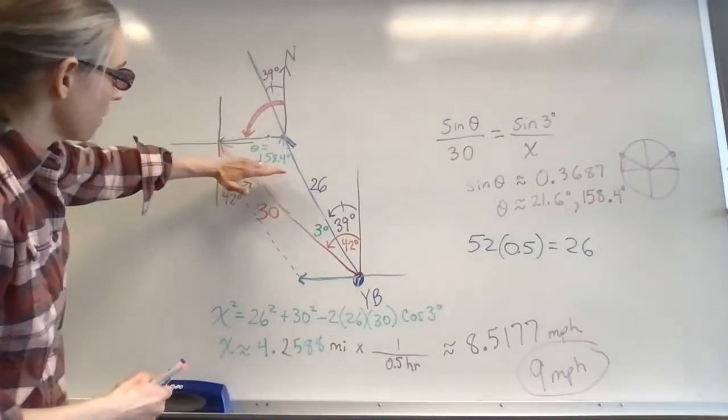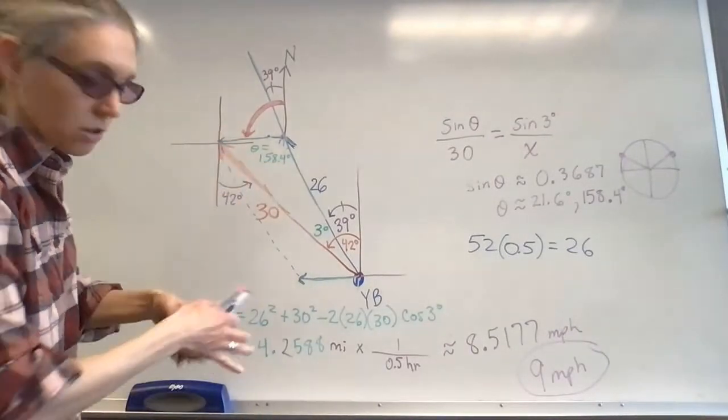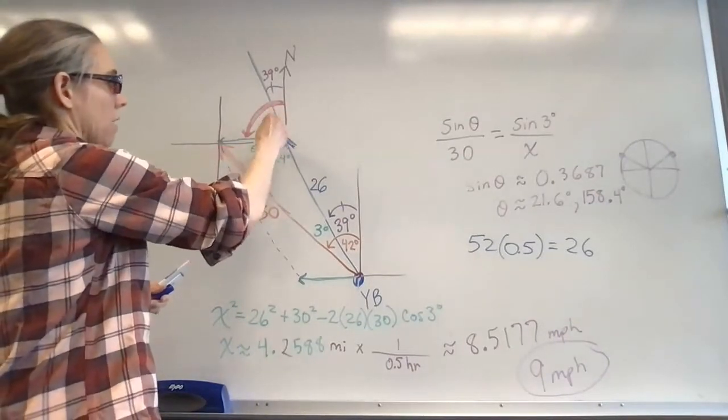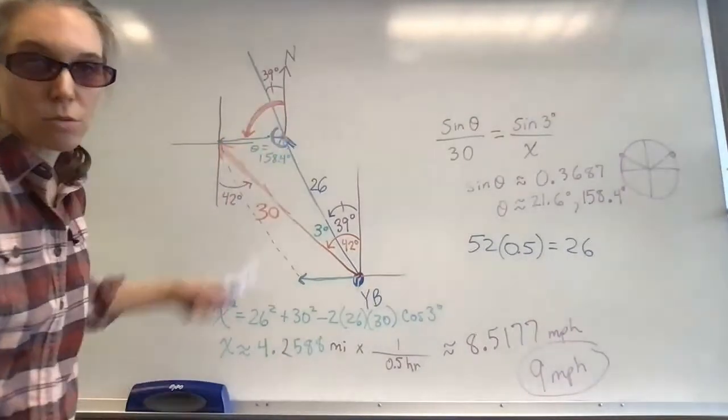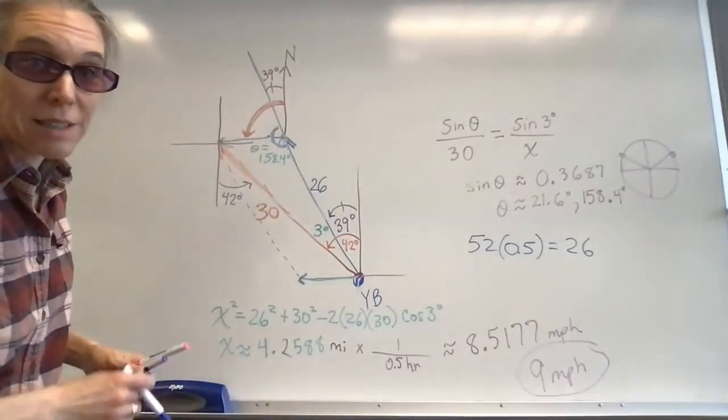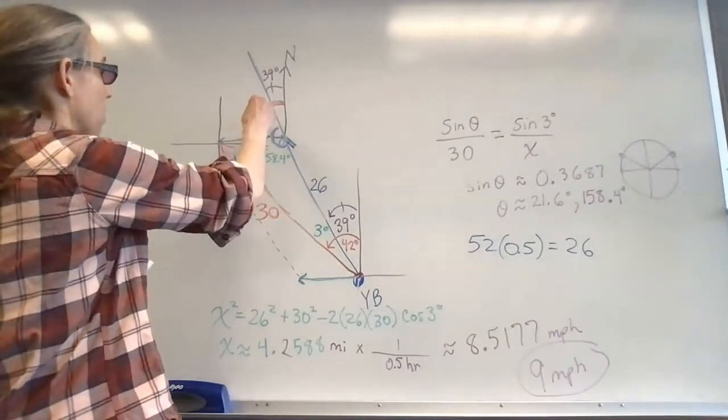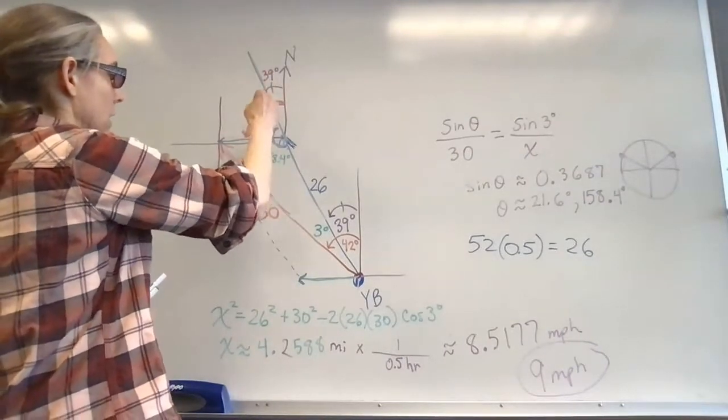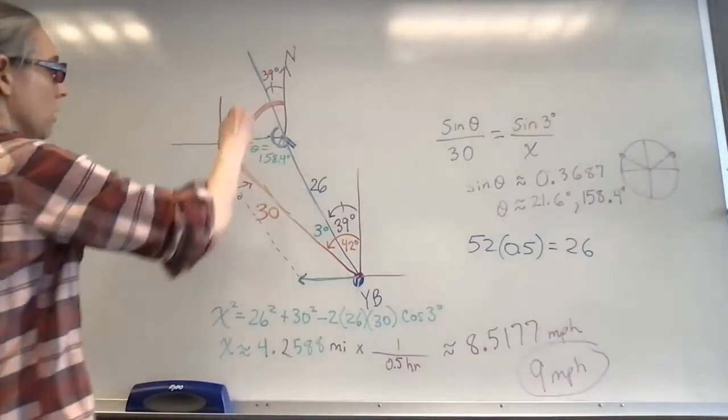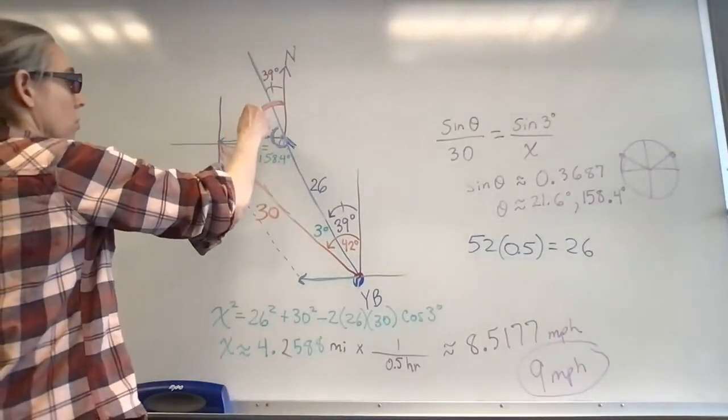So when we found this 158.4 degrees, this is good. We're on the right track because now we have a linear pair. These two angles together, the one inside the triangle and the one immediately outside the triangle, form a linear pair, which means that this other part of the pink angle is going to be the supplement of 158.4, which is 21.6.